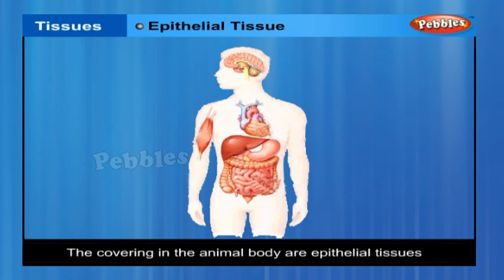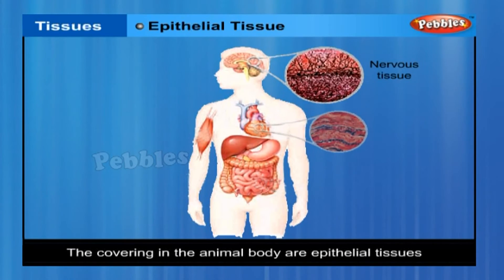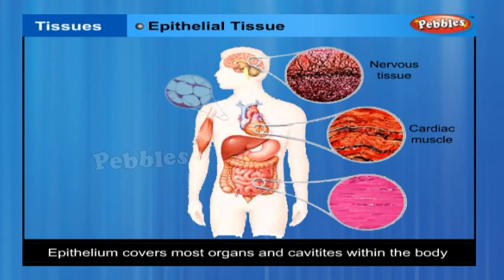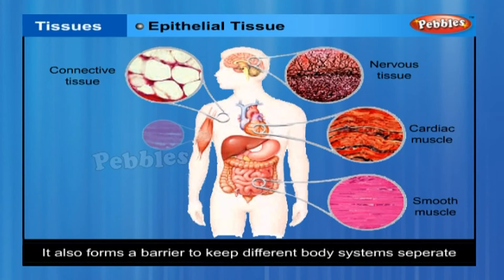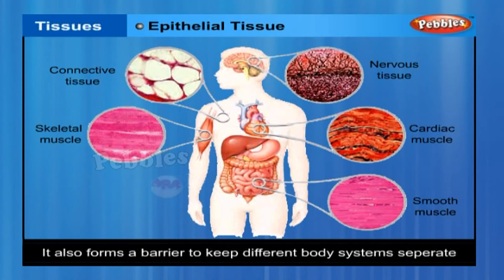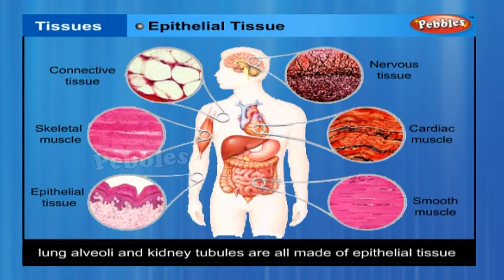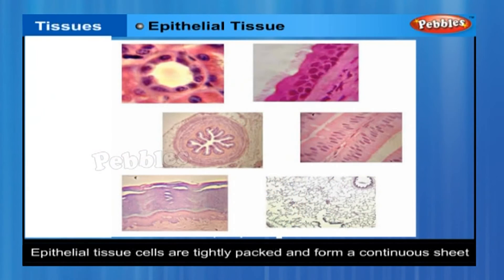The covering or protective tissues in the animal body are epithelial tissues. Epithelium covers most organs and cavities within the body. It also forms a barrier to keep different body systems separate. The skin, the lining of the mouth, the lining of blood vessels, lung alveoli and kidney tubules are all made of epithelial tissue. Epithelial tissue cells are tightly packed and form a continuous sheet.